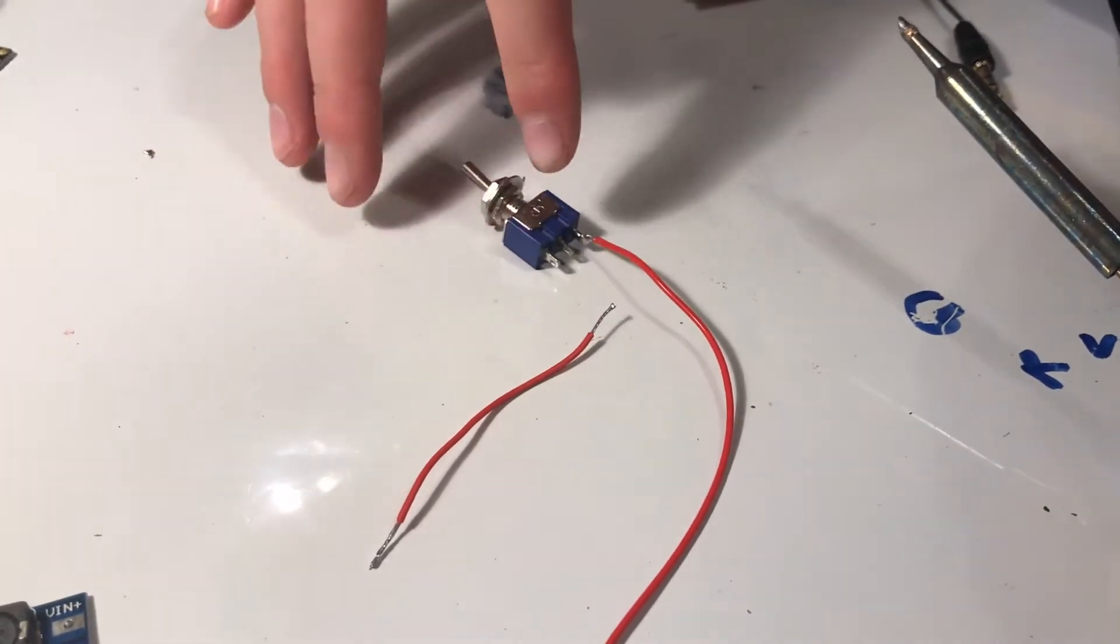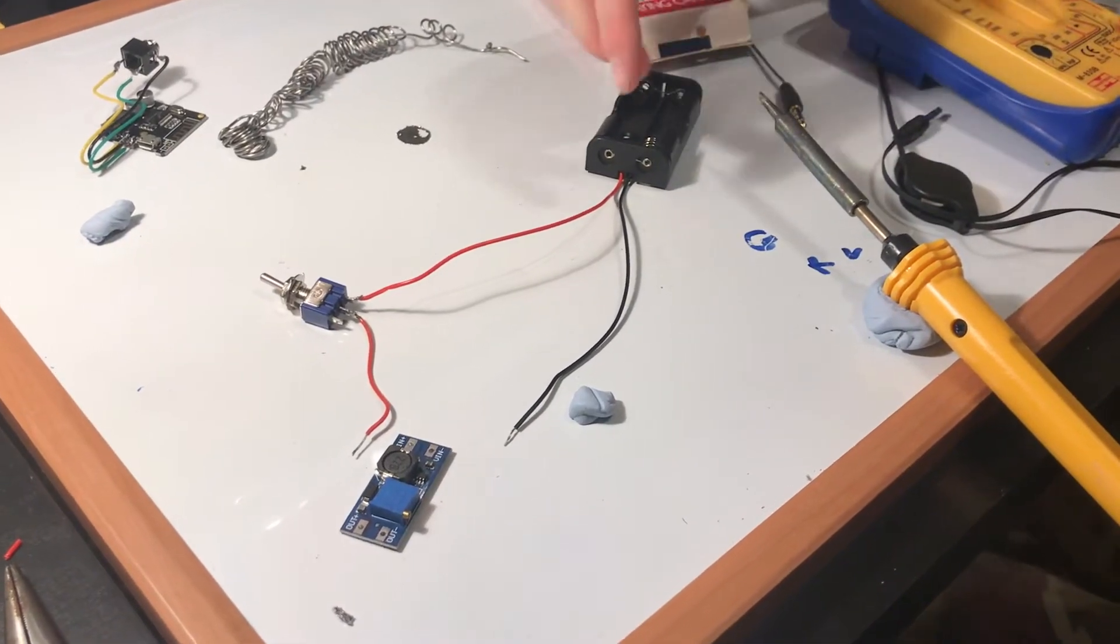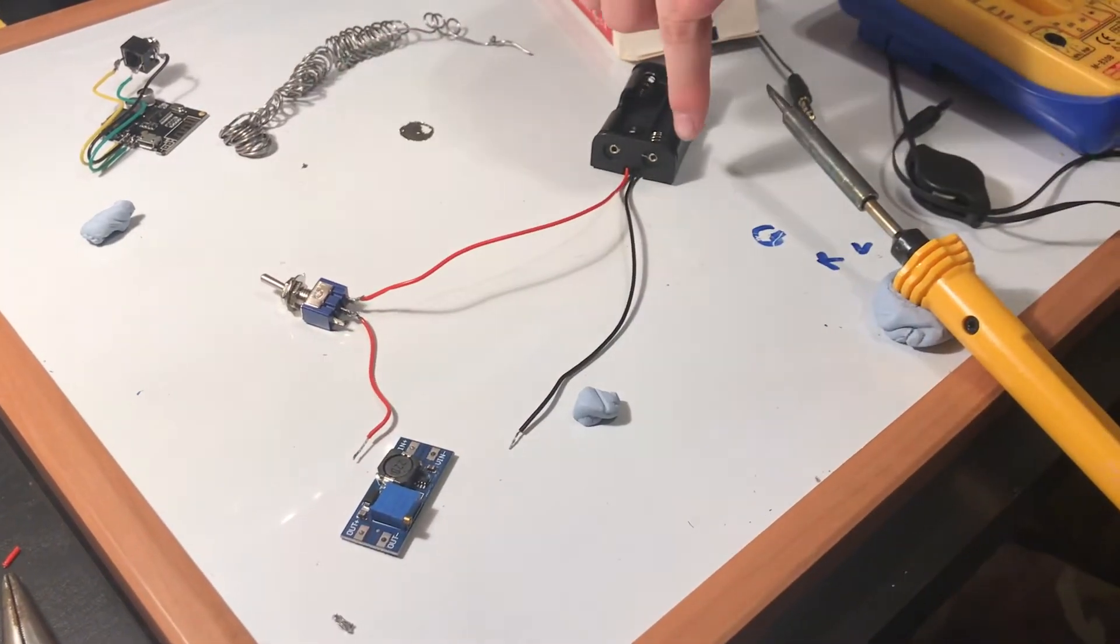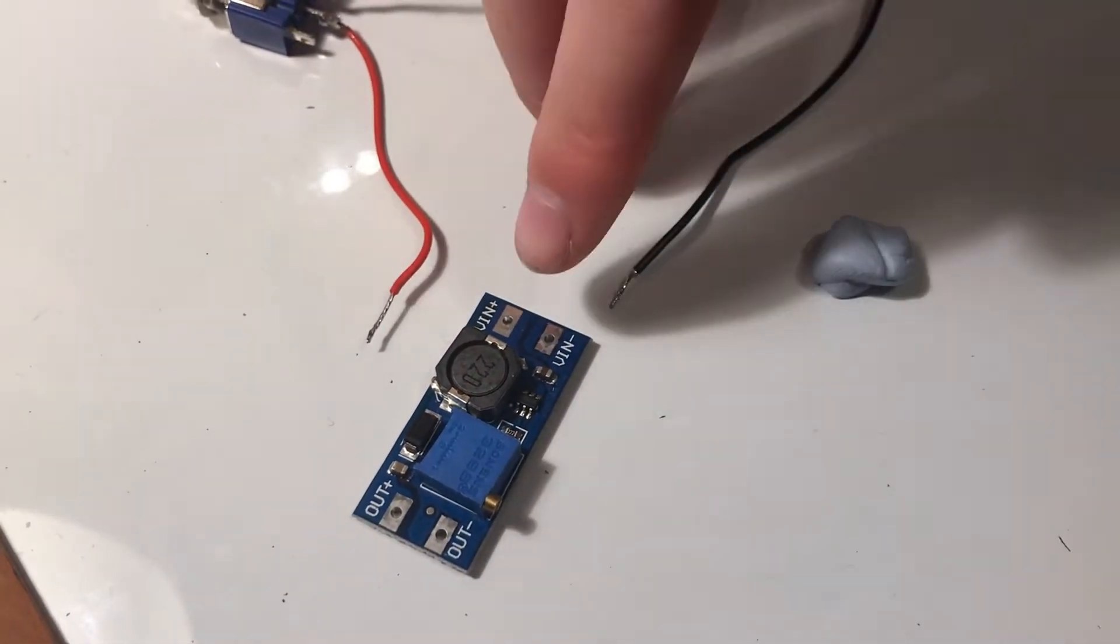We're now going to connect this to the middle contact of our switch. So we've got the positive of our battery going through our switch, and then we've also got our negative of our battery. And we just need to connect that to our voltage step-up regulator.